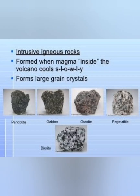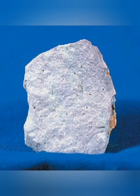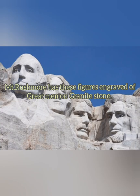Plutonic or intrusive igneous rocks are formed under the earth's crust at great depth, where they cool down and solidify very slowly, forming large crystals. Examples include gabbro and granite. These plutonic rocks come to the surface only when a great deal of erosion or denudation takes place. Most igneous rocks are extremely hard and resistant, which is why they are quarried for road making and polished for use as monuments and gravestones.